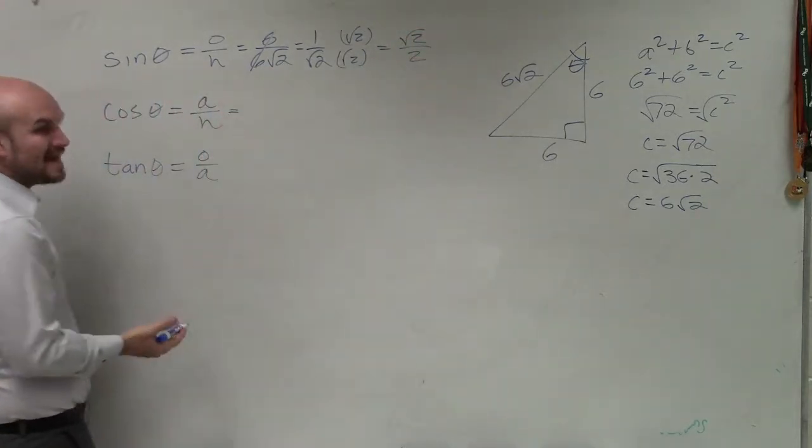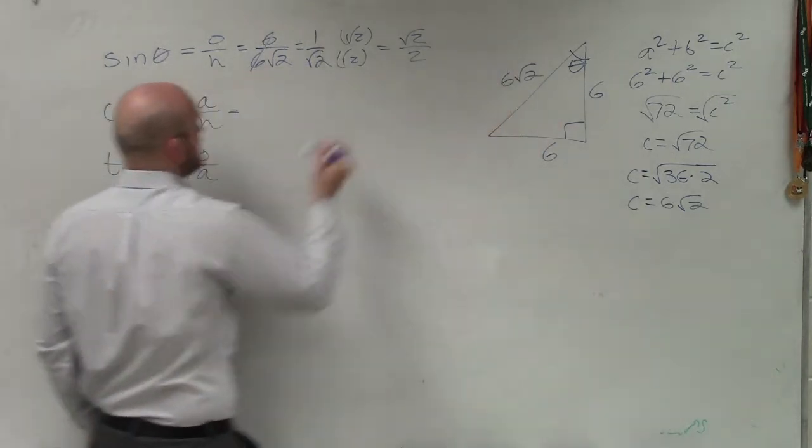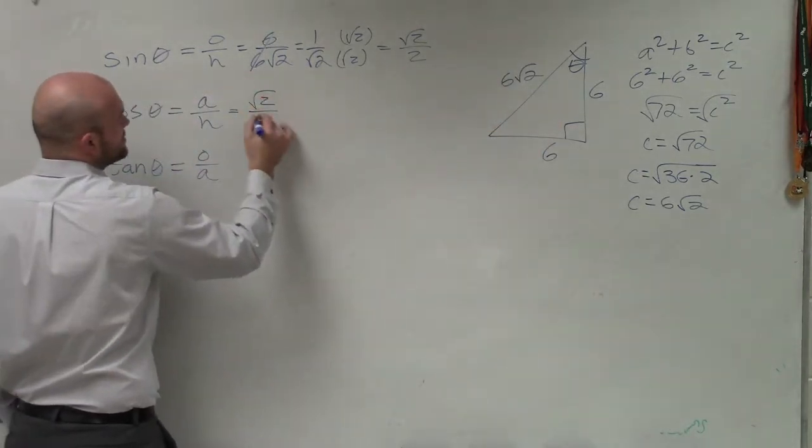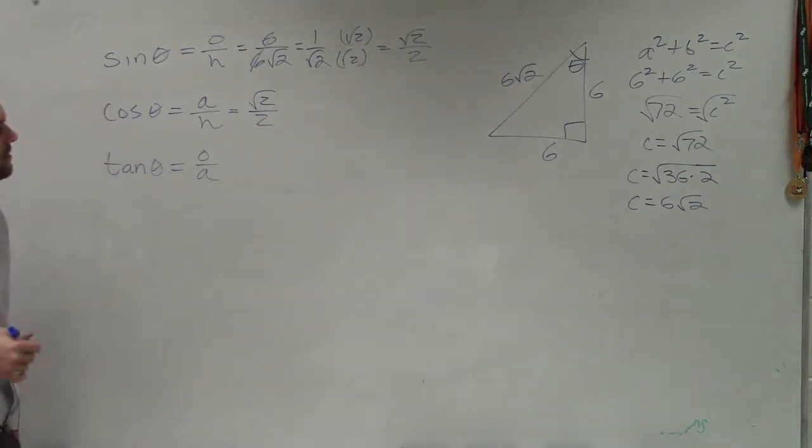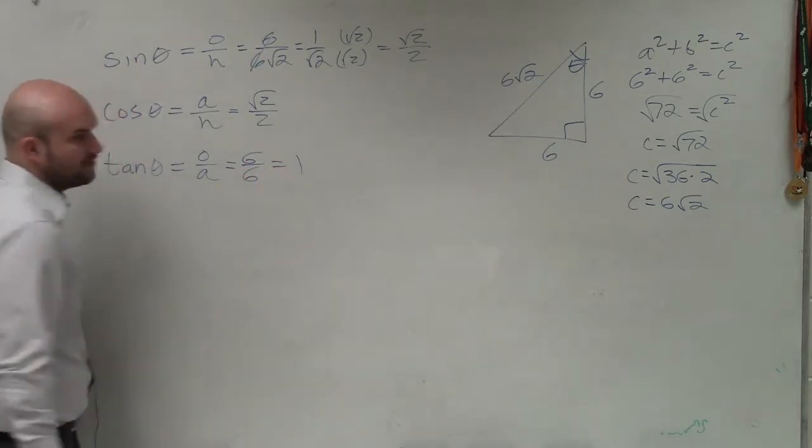Adjacent is going to be the exact same thing. It's the exact same numbers. Adjacent over hypotenuse. So I'll save myself some work and just write square root of 2 over 2. Tangent, opposite over adjacent, well, that one's pretty easy. That's equal to 1.